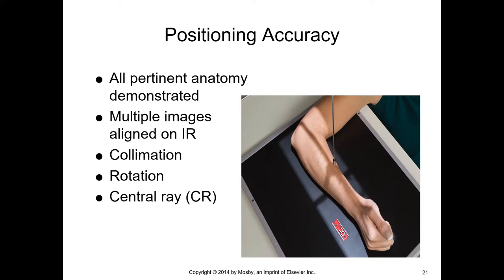Central ray placement helps us align the body part to the center of the cassette. There are three things to think about: where is the x-ray tube, where is the patient, and where is the receptor — three things that always need to be aligned. I teach students to align two of them and then bring the third into alignment. For example, with this forearm, align the cassette and central ray to each other, then place the forearm aligned to the central ray. If one and two are lined up, number three will be lined up to both.